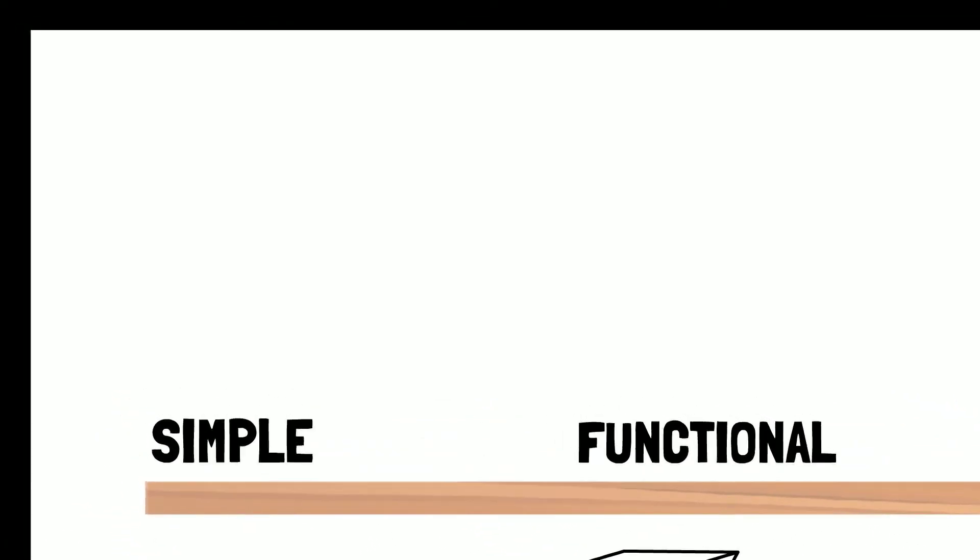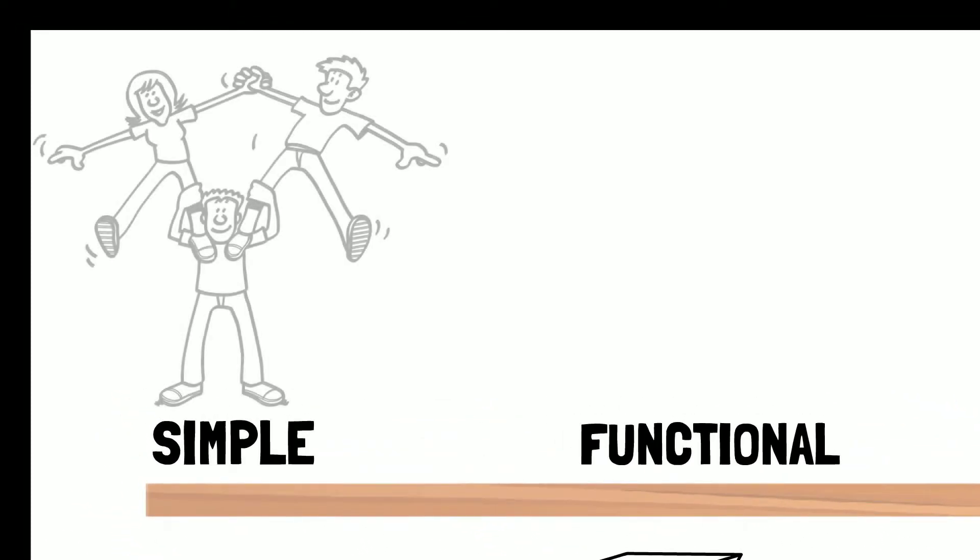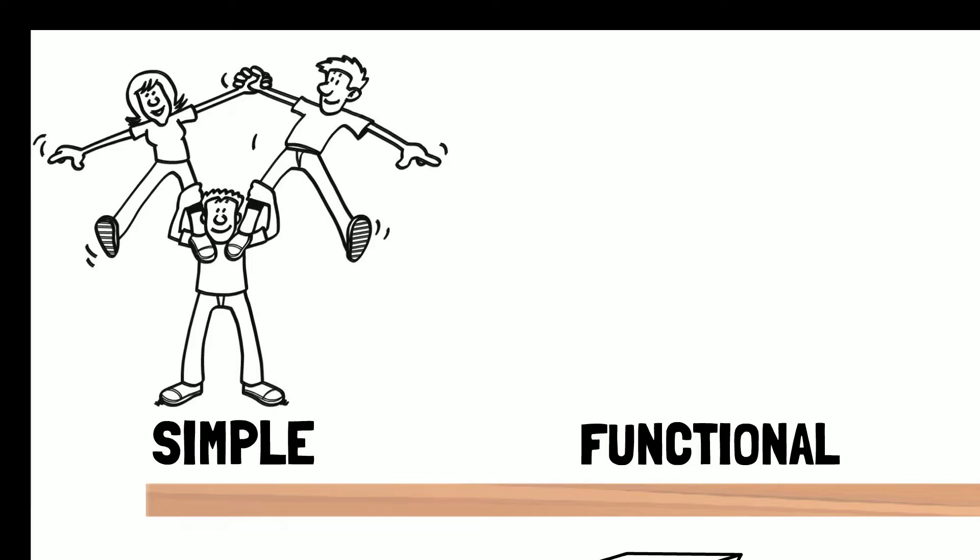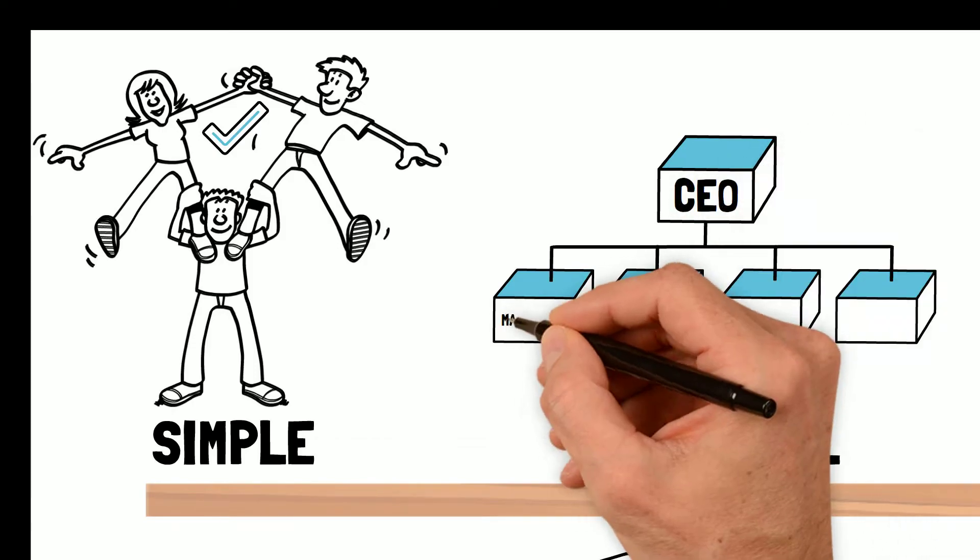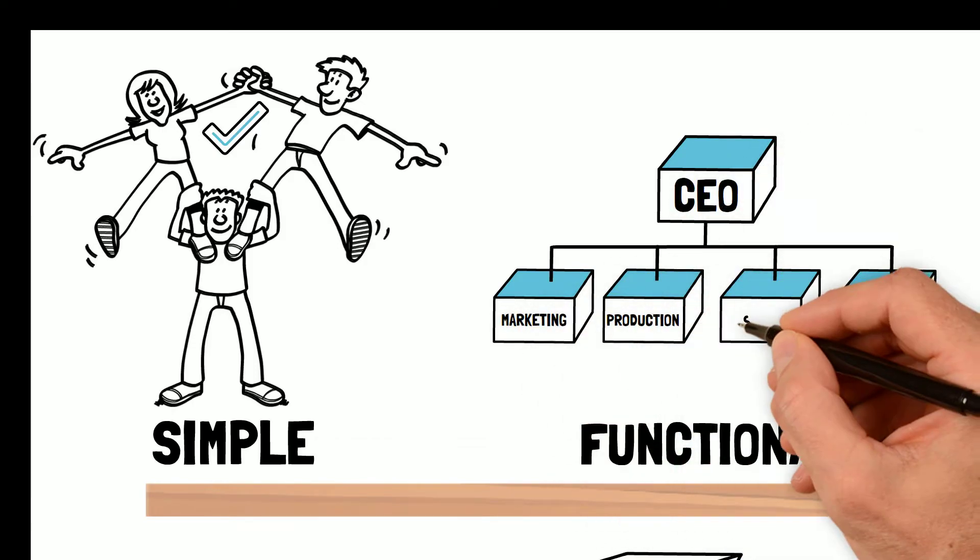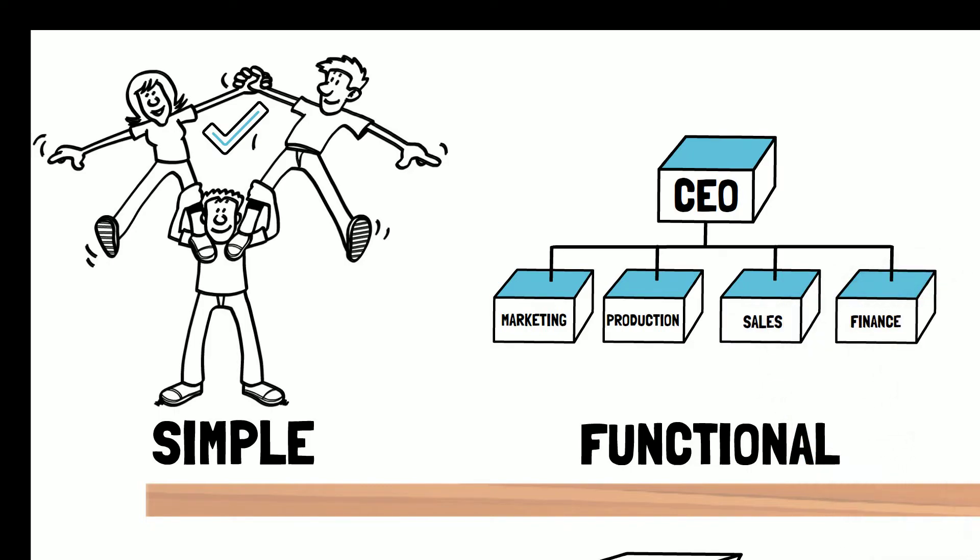Simple structure. In smaller firms, for example startups, where the founder is central and there's close communication between employees and customers, a functional team is good for delivering excellent results. Functional structure: Activities in an organization are grouped together by function, with the bottom level grouping people together with similar skills to help them focus on specific tasks or work.